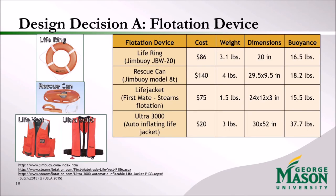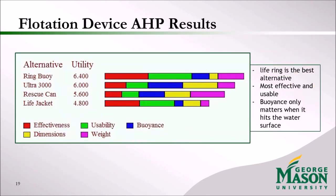For Set A, the flotation devices, after talking to many lifeguards and doing plenty of research, we narrowed down to four options: the life ring, rescue can, life vest, and the Ultra 3000 — an inflatable life jacket. We considered the factors of cost, weight, dimensions, and buoyancy for each device. Our AHP results show the highest utility is the ring buoy, making it the best alternative. Yes, it is low in buoyancy, however buoyancy only matters when it hits the water surface, and the effectiveness and usability — which are far more important — are both highest for the ring buoy.